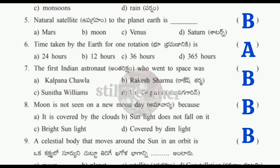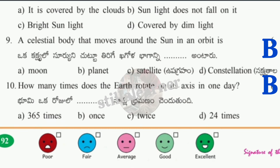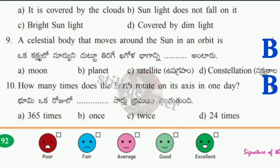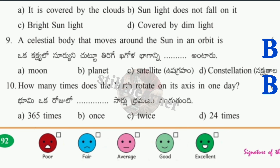Continuing choose the correct: Time taken by earth for one rotation → 24 hours. The first Indian astronaut who went to space → D (Rakesh Sharma). Moon is not seen on a new moon day because sunlight does not fall on it. A celestial body that moves around the sun in an orbit → B (Planet). How many times does the earth rotate on its axis in one day → B (once).